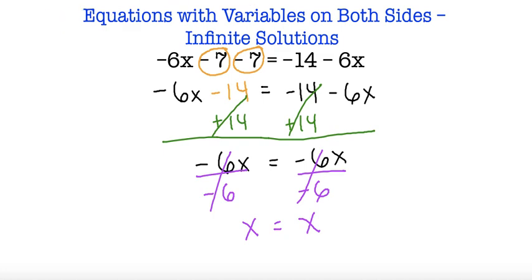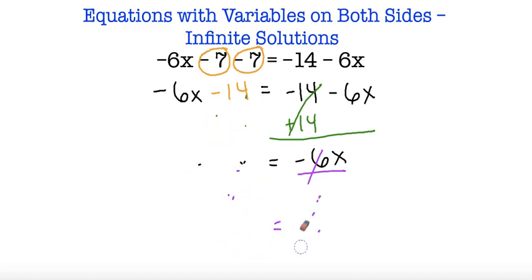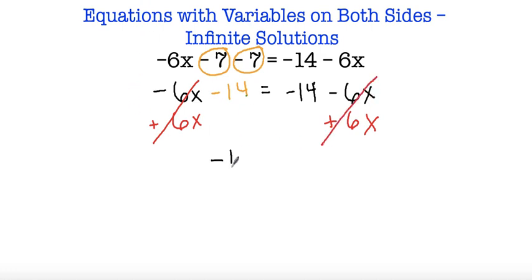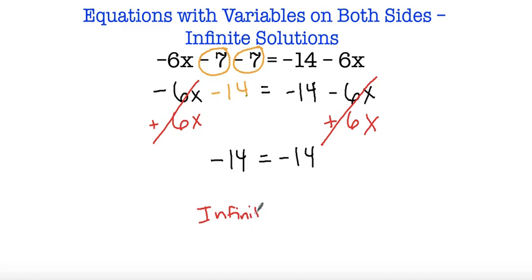Now what would have happened instead of adding 14 on both sides — what if we got rid of our x's first? If we add 6x on both sides, we can see this would cancel out and this would cancel out, so we'd end up with negative 14 is equal to negative 14. So if you end up canceling out the variables and get negative 14 equals negative 14, or 5 equals 5, or anything without an x — as long as those two numbers are equal to each other, this will still be infinite solutions.